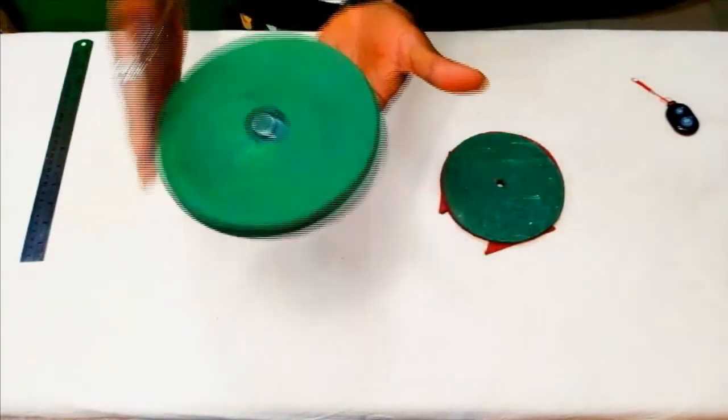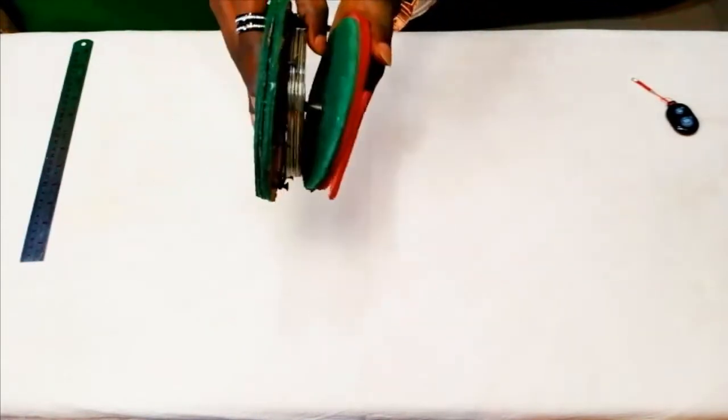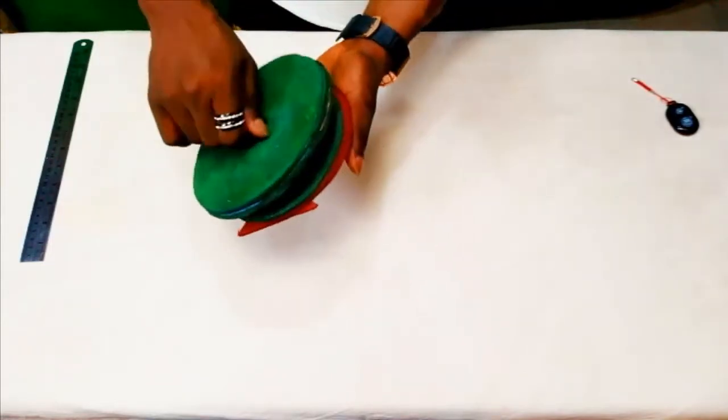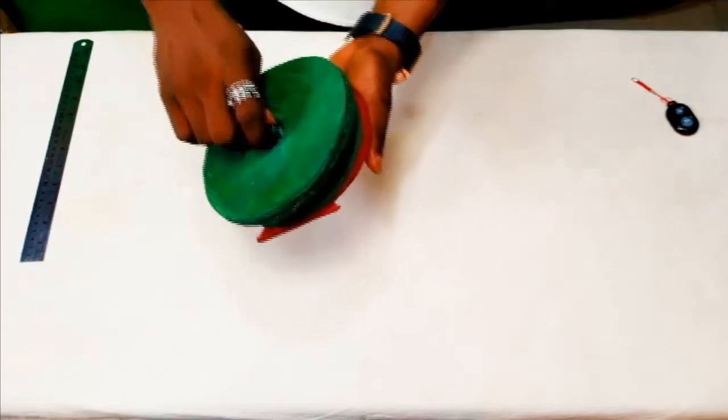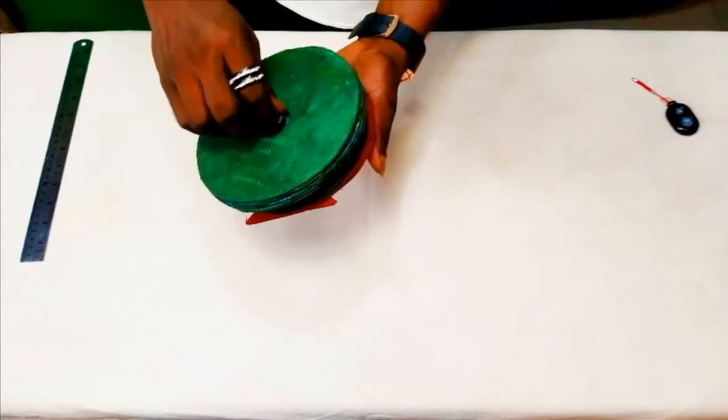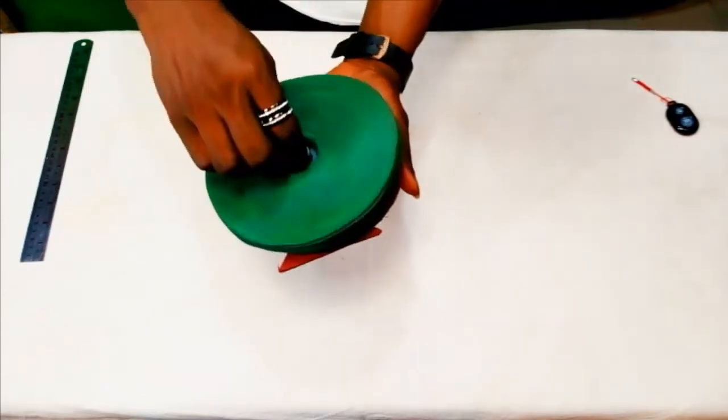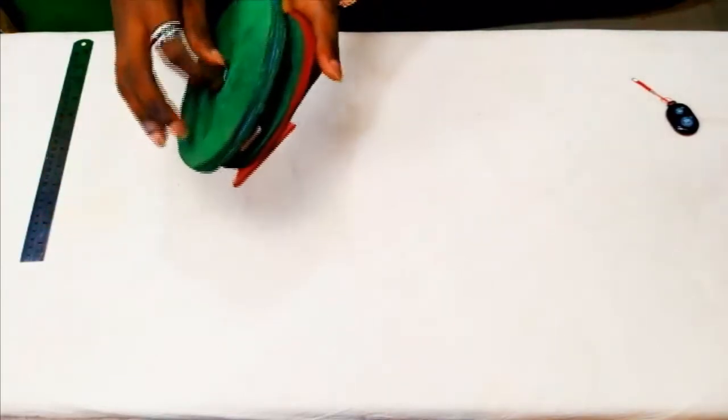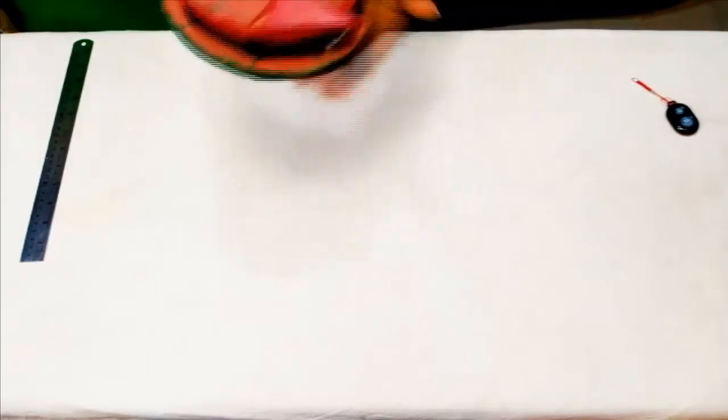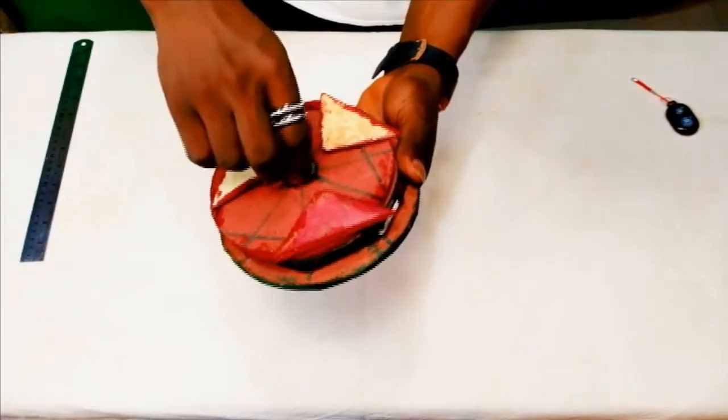You can see we're already having a smooth movement already. Then the last part, we are going to screw this last part to it. It is easy as ABC. I believe anybody can do this. Anybody, even a kid can do this. You can see that. I just screwed that in and we are having a smooth roll. Then after that, I am going to fix in my nut to just hold it down finally. And we are done. That's it. That's all.